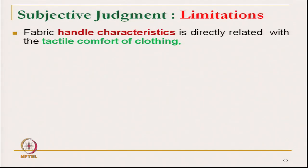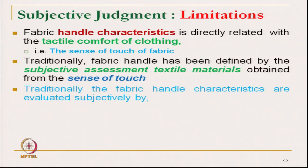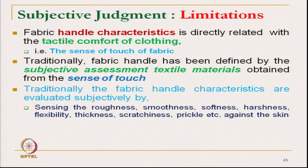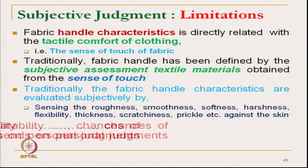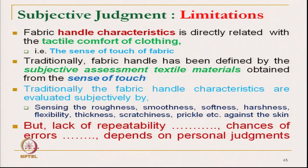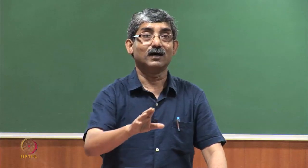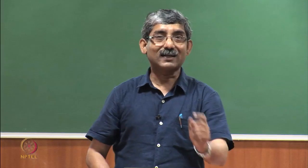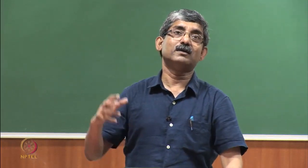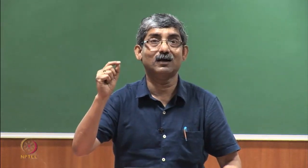All subjective judgments have their own limitations. Although they directly correlate with the tactile comfort of clothing — the sense of touch — they have limitations. Sensations of roughness, smoothness, softness, harshness, flexibility, thickness, and scratchiness against the skin can be directly sensed. But the main problem is lack of repeatability and chances of error, as it depends from person to person. A person may perceive a particular fabric differently under different mental and psychological conditions, and this subjectivity changes with the environment.